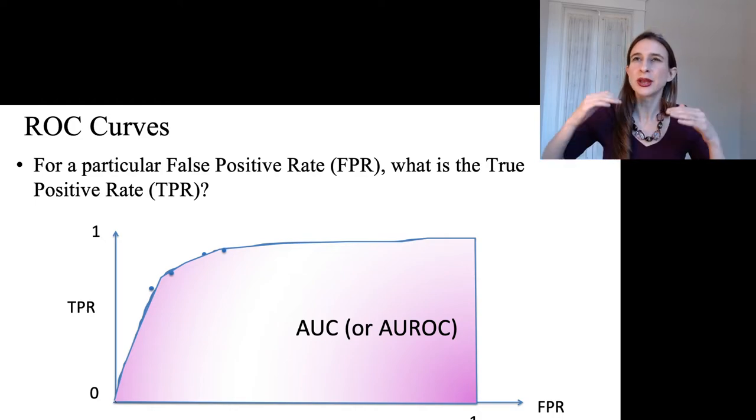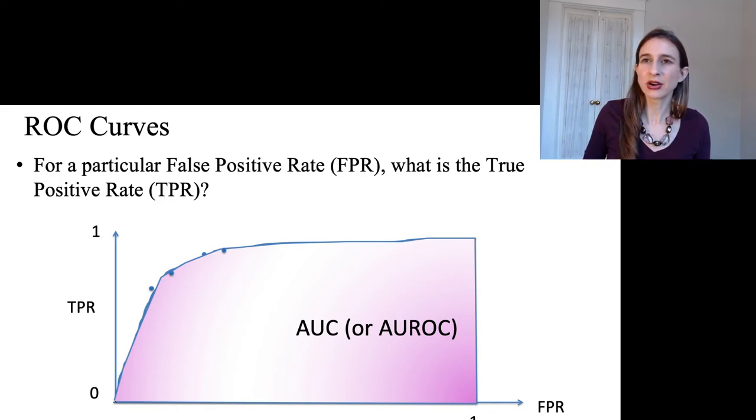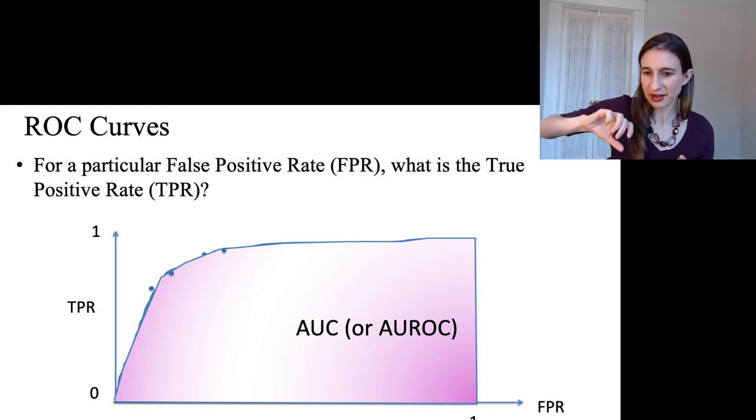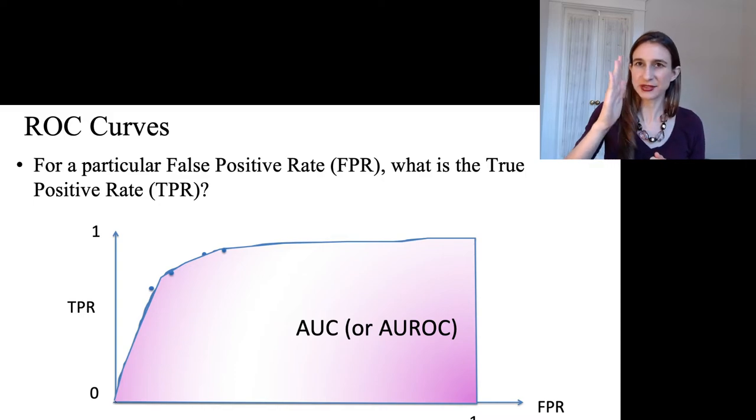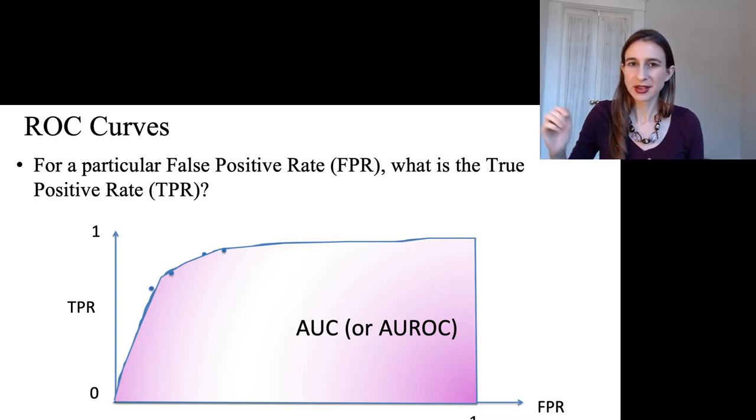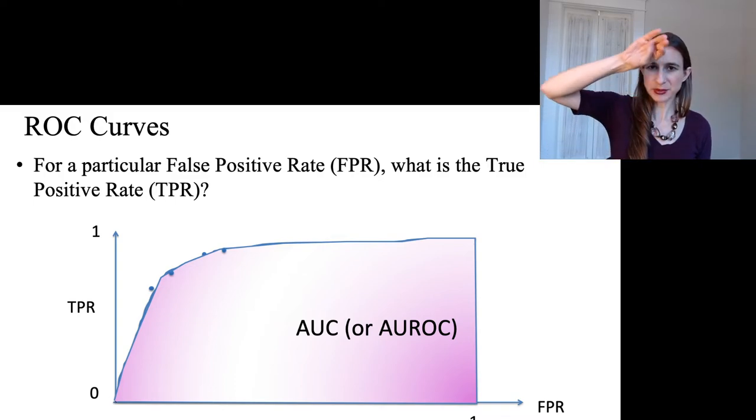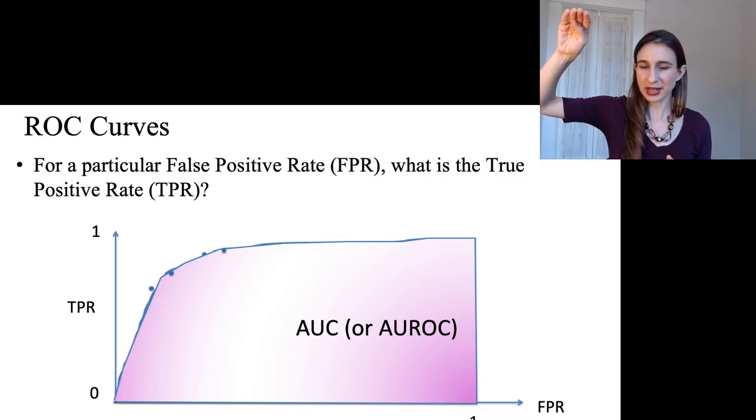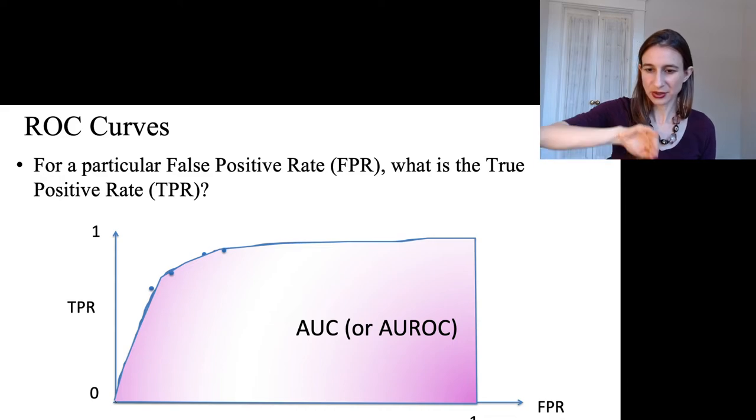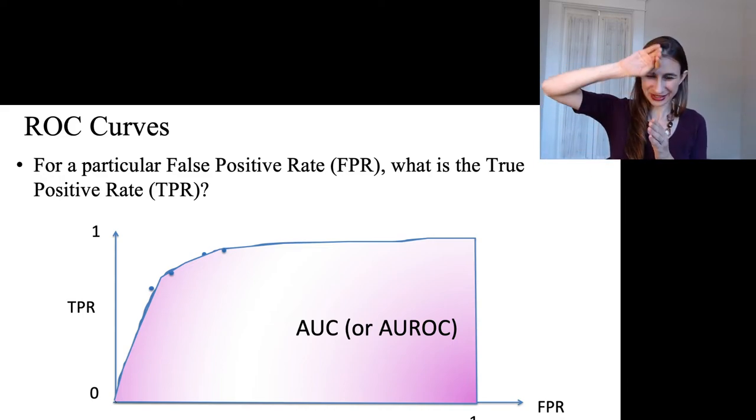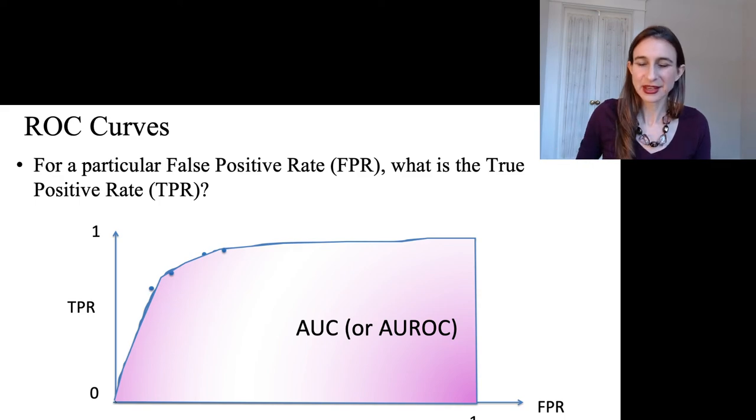If the classifier was amazing, then as you move that dial, you would have seen all the positives before you saw all the negatives. In that case, your true positive rate would have gone all the way up to one before hitting any false positives. Your ROC curve would look just like going up and then over. Your area under the ROC curve would be one. So the best possible AUC that you can get is one.